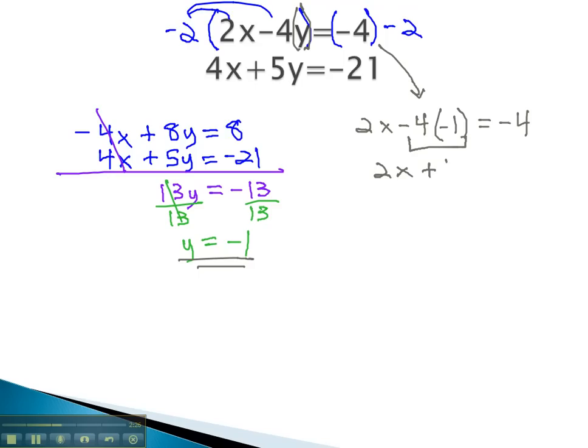Multiplying gives us 2x plus 4 equals negative 4. Subtract 4 from both sides, and 2x equals negative 8. And finally, divide by 2 to get x is negative 4.